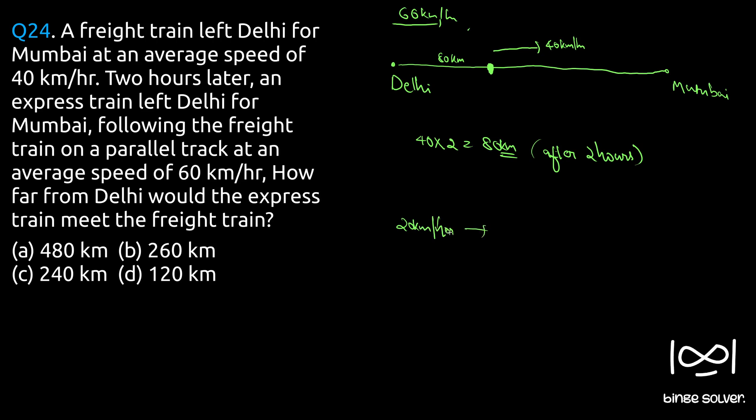So at 20 km per hour that train is moving at a relative speed, and when at the time they meet, using the relative speed concept it should cover 80 kilometers. At a relative speed of 20 km per hour it should travel 80 kilometers. So time will be distance by speed, so 80 km by 20 km per hour, so we get four hours as our time.